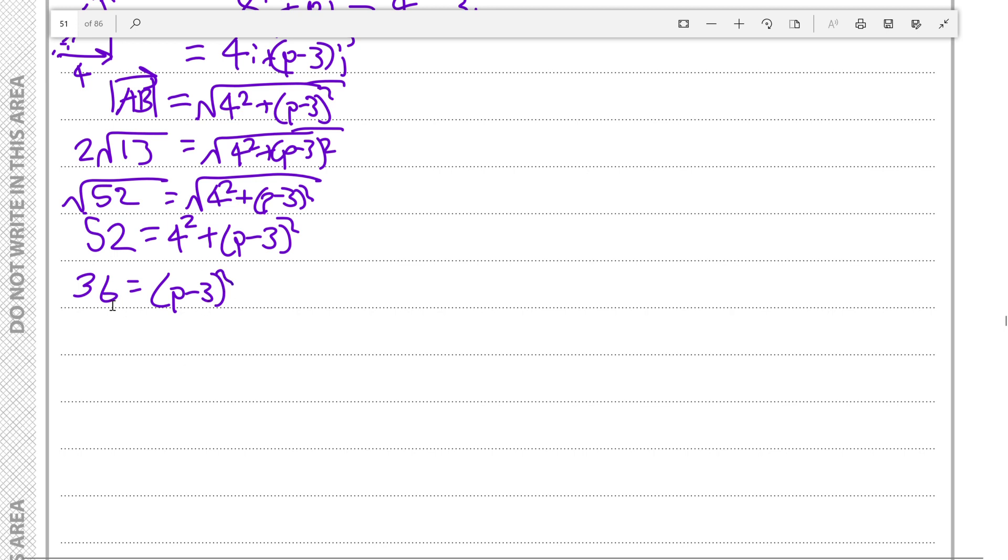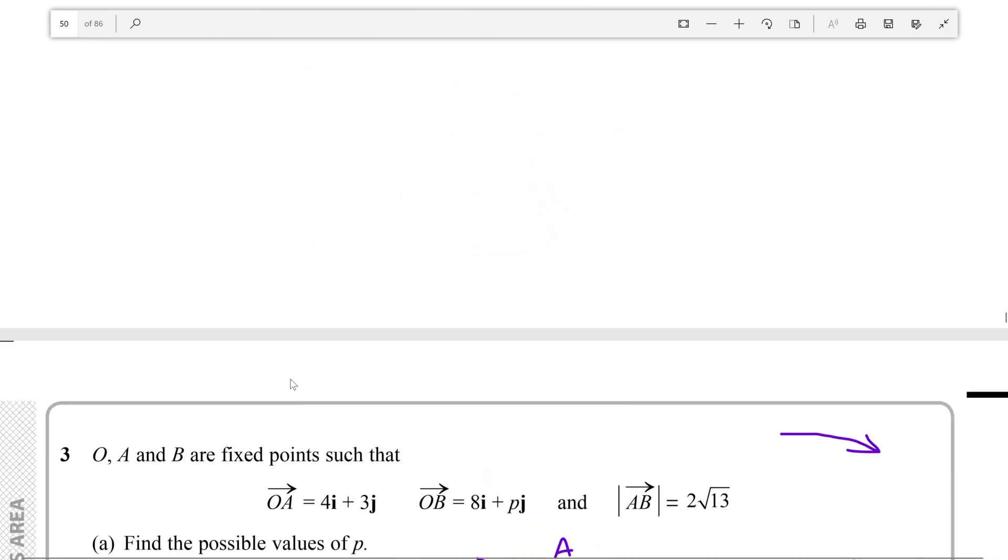Now if we want to take the square root of both sides again we'll find that p minus 3 is equal to plus or minus 6. So when p minus 3 is equal to positive 6, add 3 to both sides, p is 9. That's one solution. And when p minus 3 is minus 6, add 3 to both sides, you get p is equal to minus 3. So those are our two possible values of p and that's the answer to part A.